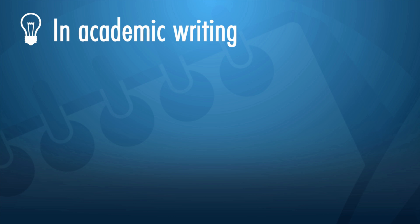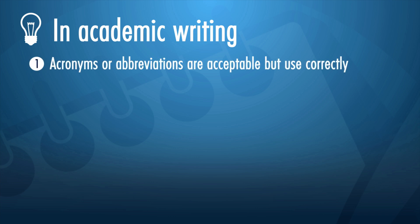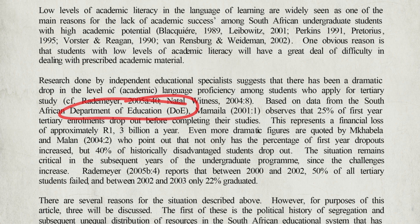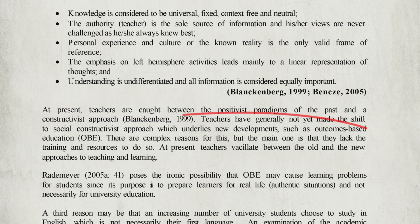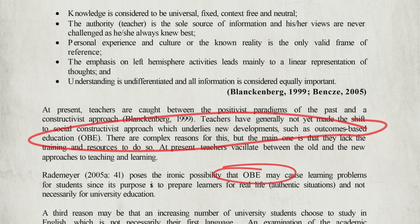In academic writing, acronyms or abbreviations are acceptable, but you have to use them correctly. If you use the name of an organisation or technical words repeatedly, you can use the acronym or abbreviation. You should write the term out in full when you use it for the first time and give the acronym or abbreviation directly after it. From the second time onwards, only use the acronym or abbreviation.